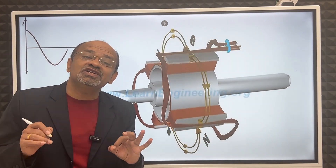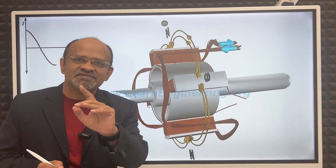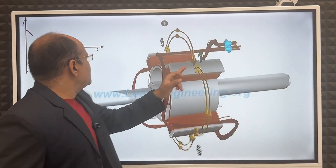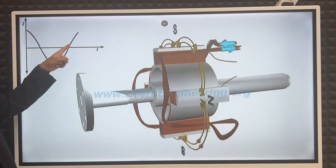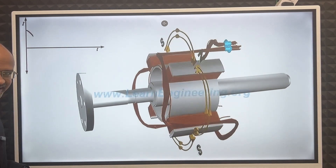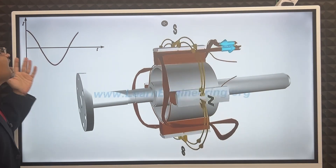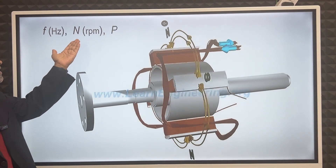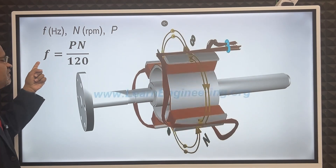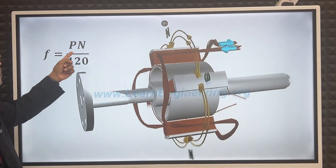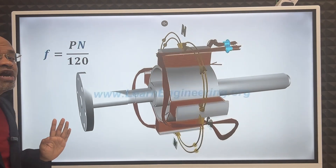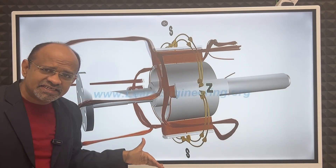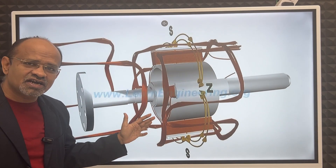The phase difference is 120 degrees — 360 divided by 3 is 120. In one coil, we get power this way. The frequency formula is: f = pn / 120. Whether you want to produce electricity at 60 Hz or 50 Hz, this formula applies, where p is the number of poles and n is the RPM.